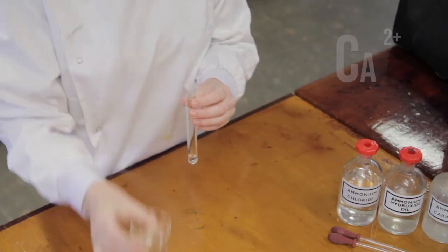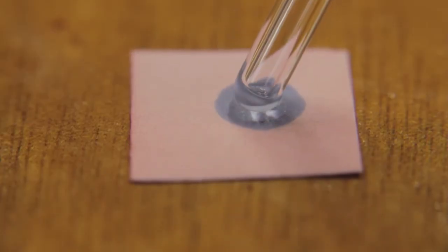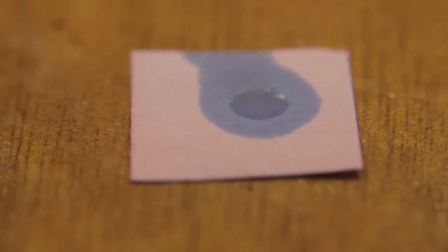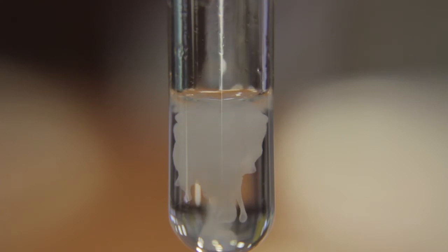The calcium ion Ca2+ is an insoluble carbonate. By adding ammonium chloride and ammonium hydroxide, the solution becomes basic. When we add ammonium carbonate, a white precipitate is formed. This is characteristic of insoluble carbonates.